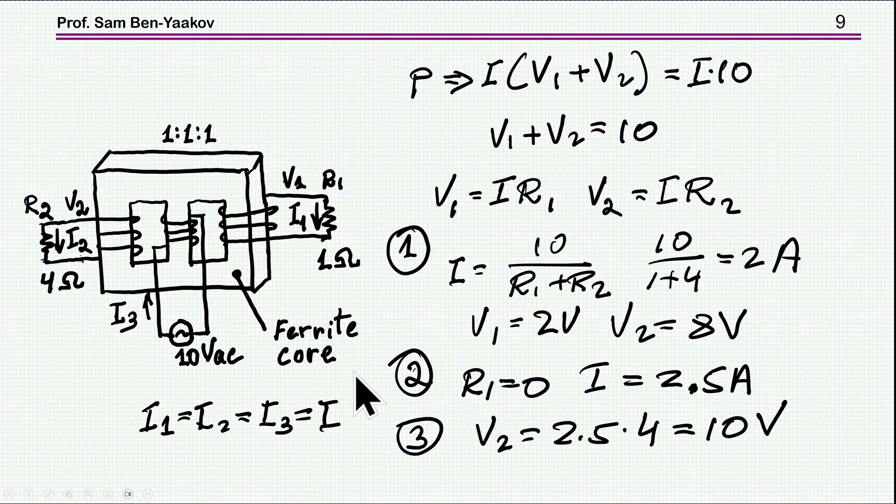And then for the question of what will happen if this one is shorted, the current now will be 2.5 amp using the same logic here. And then the voltage here will be this 2.5 amp times 4, which is 10 volt. So this is the answer to the riddle, based on this reluctance model with the assumption that I've made.